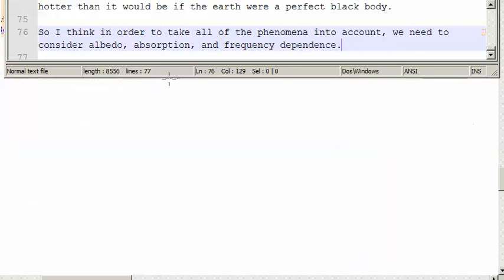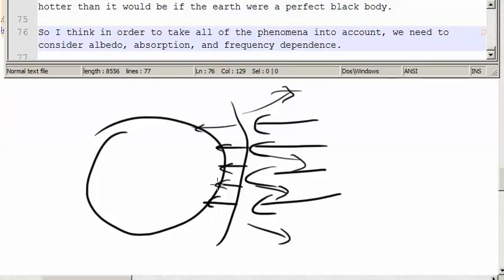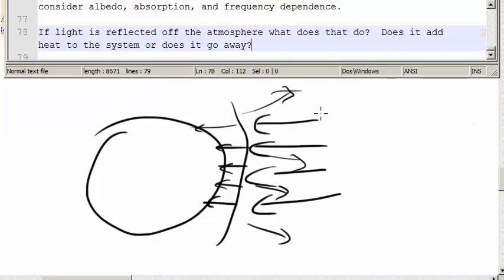So I think in order to take all of the phenomena into account, we need to consider albedo, absorption, and frequency dependence. If I have light coming in on the surface of the planet, it comes into the atmosphere. If the atmosphere is transparent to that light, it will get into the planet's surface. If it's not transparent, then it will be reflected off of that. If light is reflected off the atmosphere, what does that do? Does it add heat to the system, or does all of the energy go away?